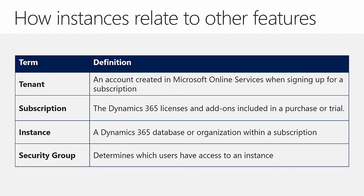One important fact to keep in mind: some functionality in Dynamics 365 is only available when using online services. For example, the Relationship Insights functionality introduced with Dynamics 365 requires both Dynamics 365 and Exchange to be online and within the same tenant. The vast majority of Dynamics 365 functionality works whether an organization is online or on-premise, but sometimes organizations choose online after seeing functionality that would create massive value for them.